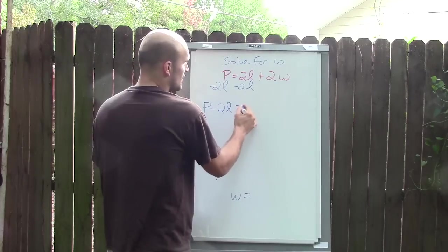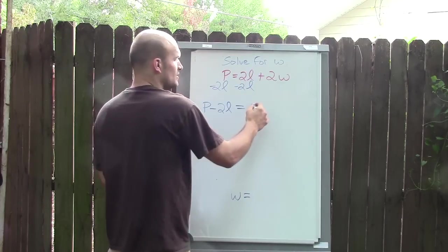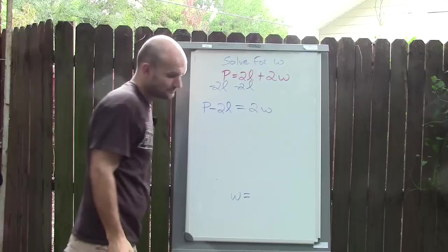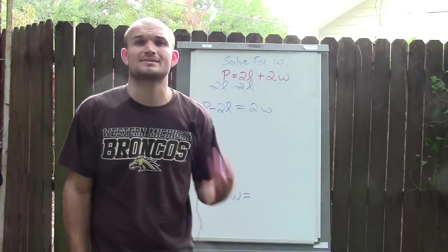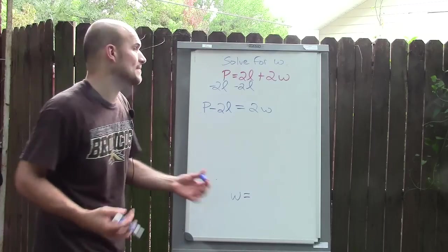So P minus 2L equals 0 plus 2W, which is 2W. Now we look at our variable and say, what has happened to my variable? It's being multiplied by 2.